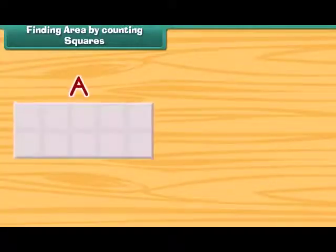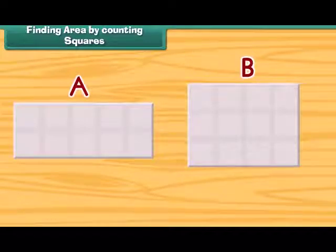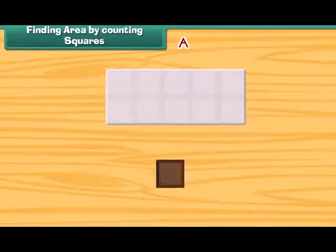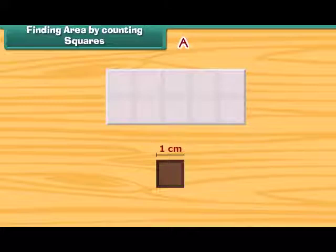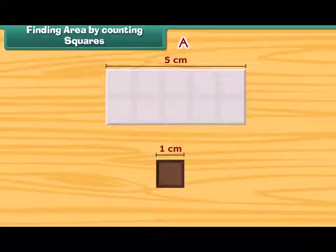Friends, we have these two chocolates. Let us find out which one is bigger and which one is smaller. We will take the help of one square piece of chocolate of side one centimeter. The length of chocolate A is five centimeters.